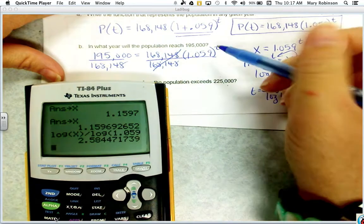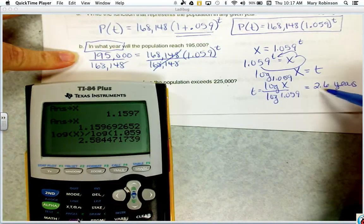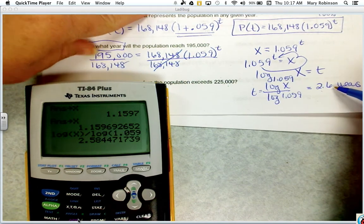So time would equal 2.6 years. It does, however, say in what year. So please be careful. It doesn't say how long. So if you think 2.6 years from 2010,